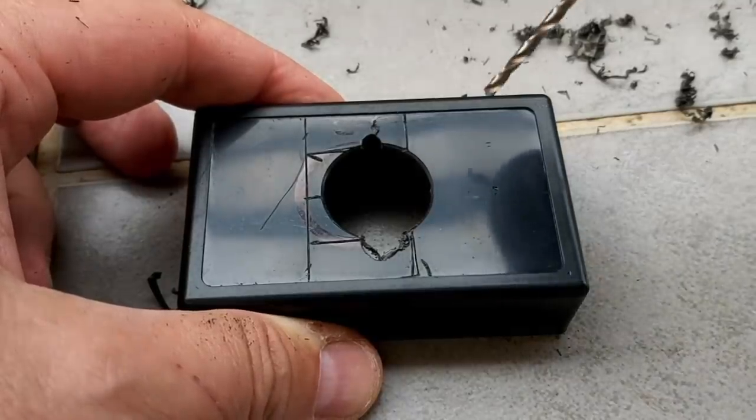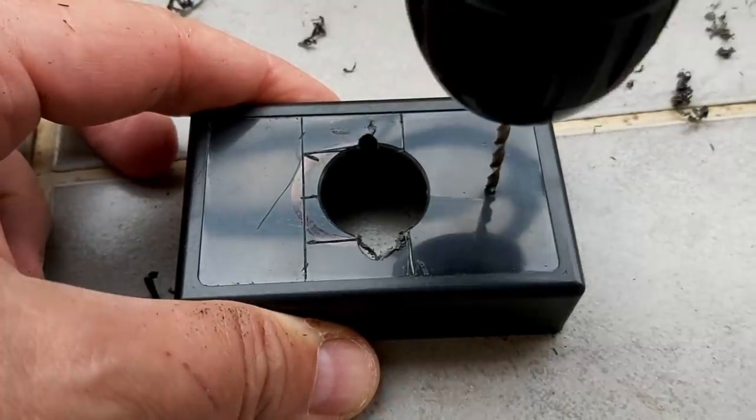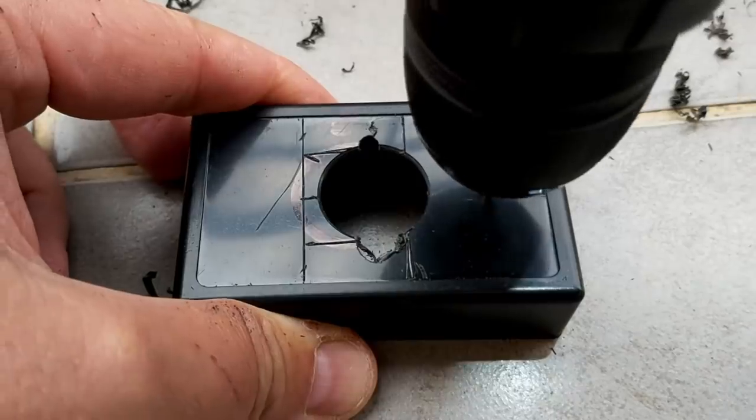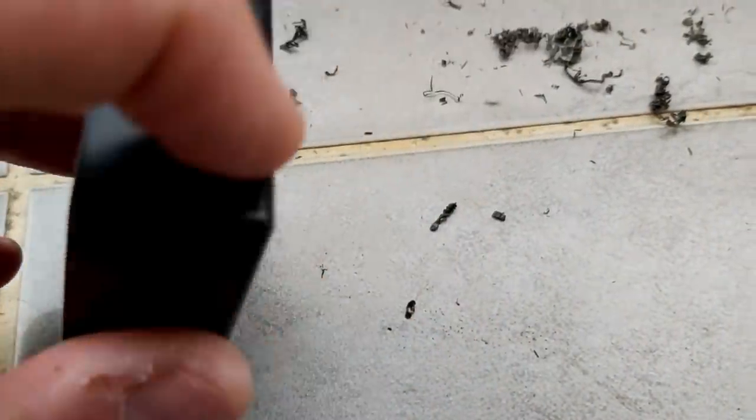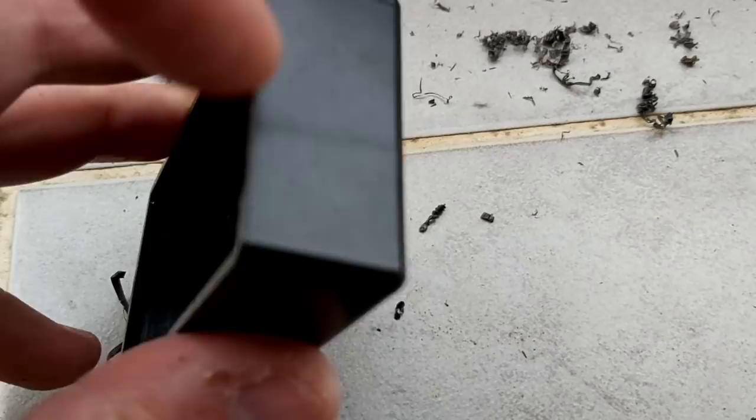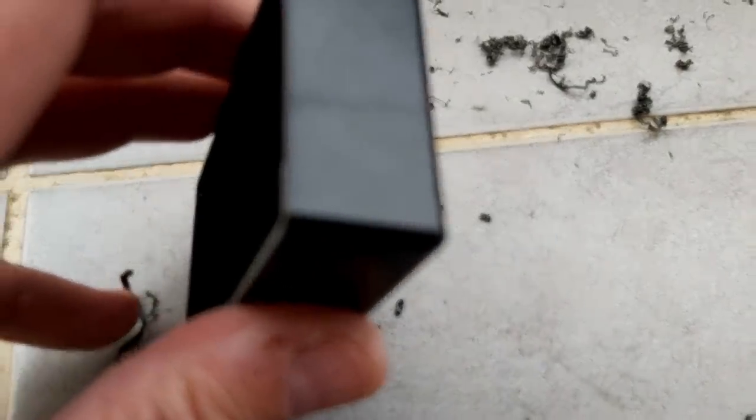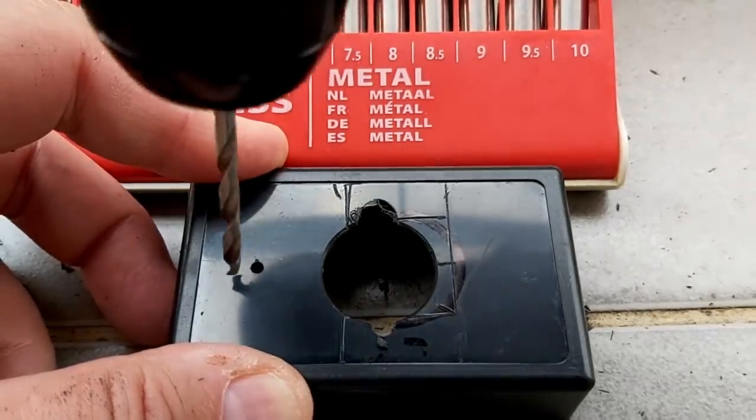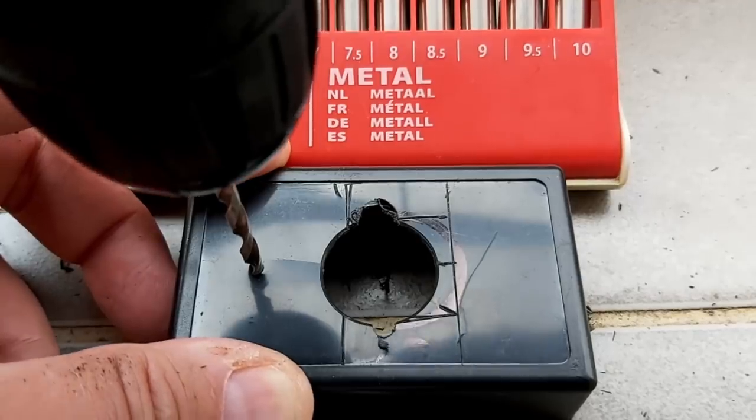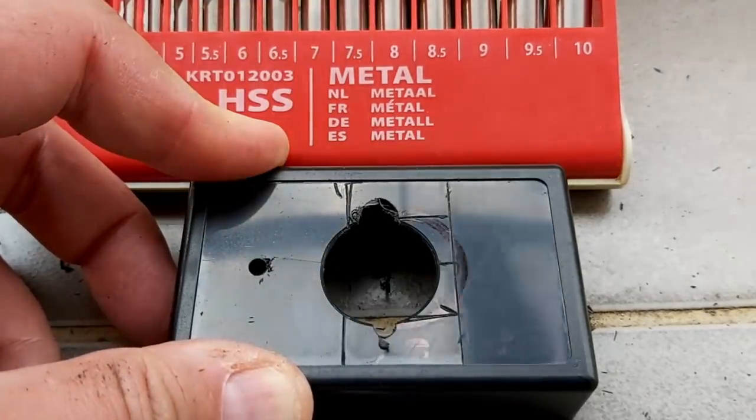Now I drill the hole for the potentiometer. And I think I'm going to put a BNC on top. It's really not necessary, but it'll look nice. And this time I'll do it just a little bit at a time. Live and learn.